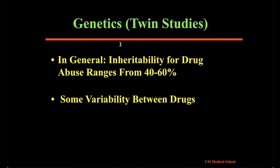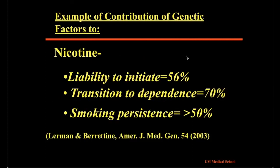We have learned a lot about the contribution of genetics from twin studies. The data show that heritability for drug abuse ranges from 40 to 60%, although some differences exist between different types of addiction and different substances. This slide shows examples of the contribution of genetic factors to initiating and continuing to use tobacco, and as you can see, the transition to dependence is highly influenced by genetic factors.